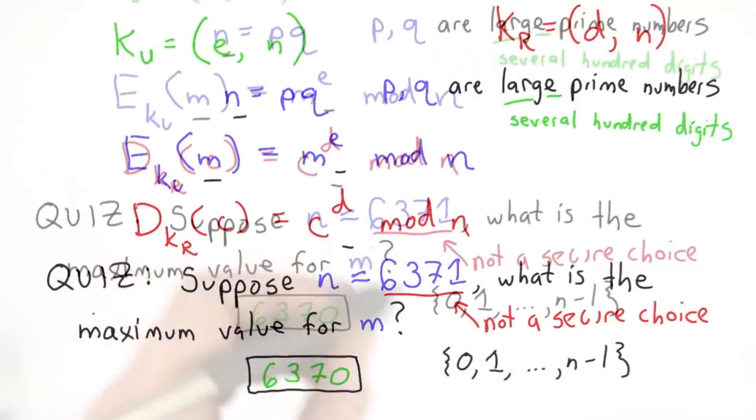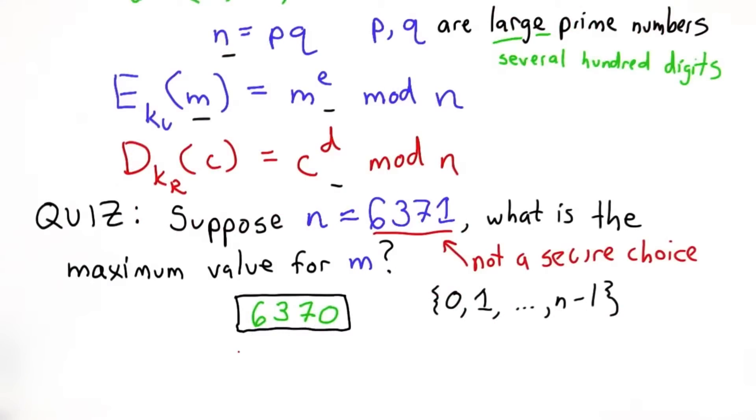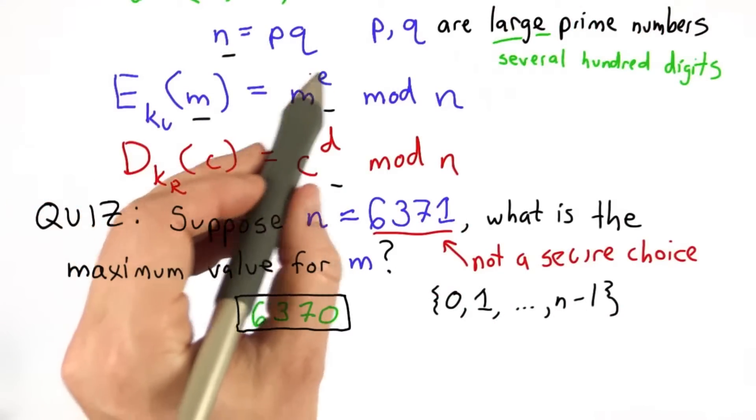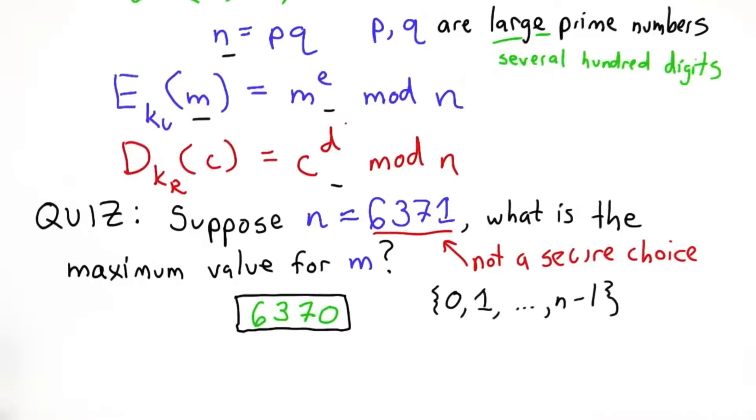But we should be very careful. What if the value m is 0? If m is 0, no matter what the exponent is, we still get 0 as our result. That's not a very good encryption function if the result doesn't depend on the key. Same thing if m is 1, we still get 1 as the output. And in fact,